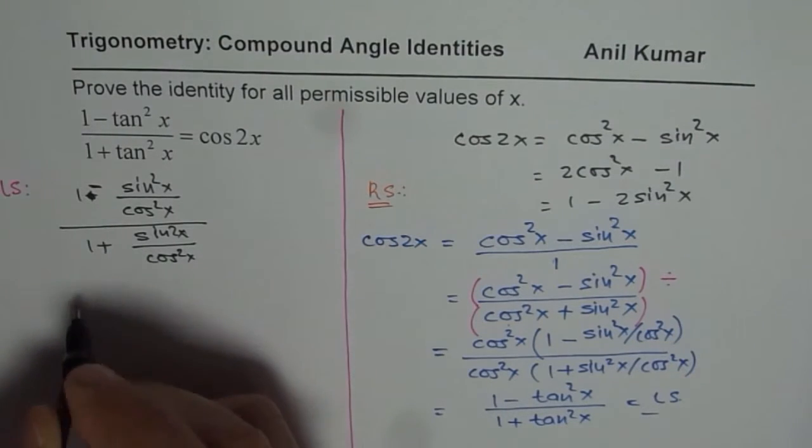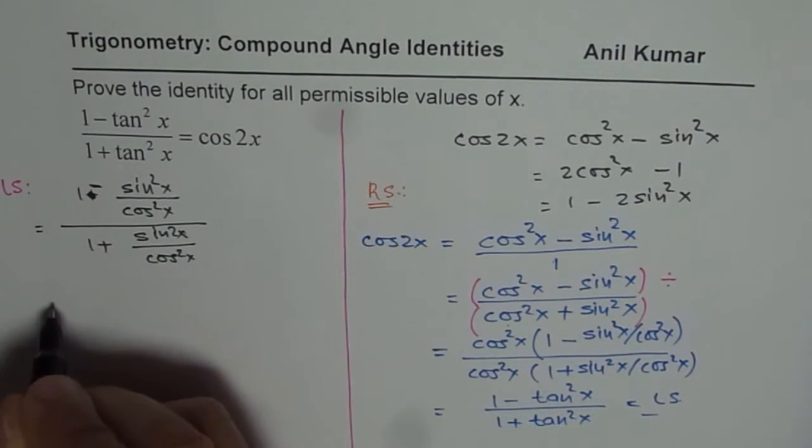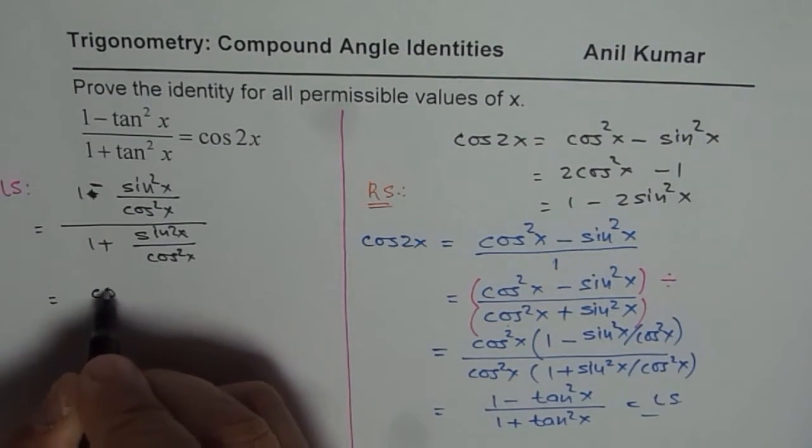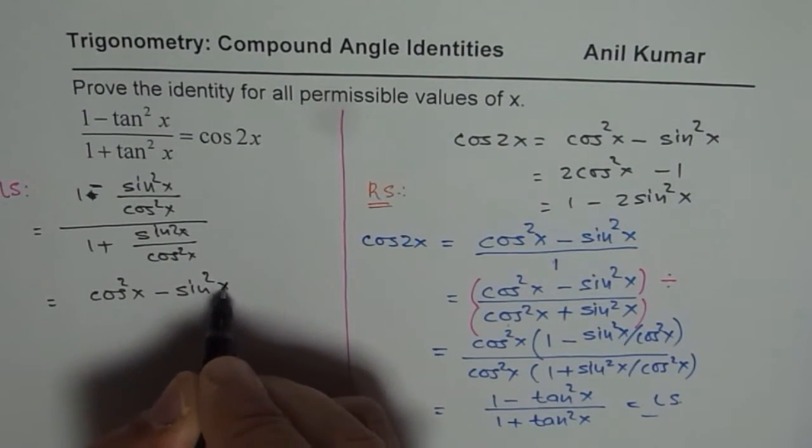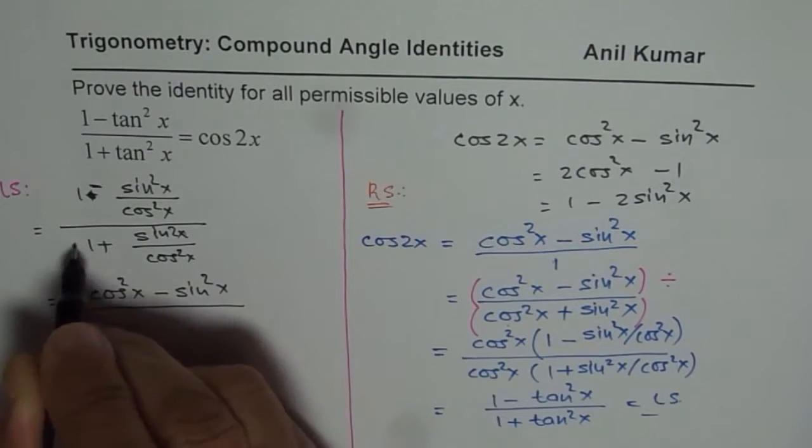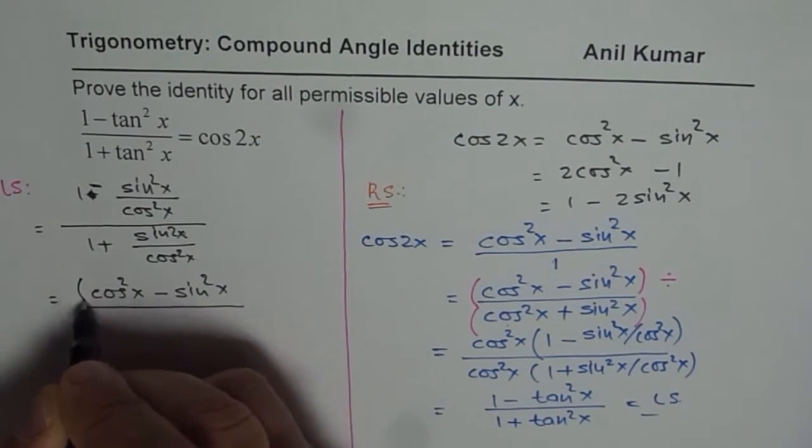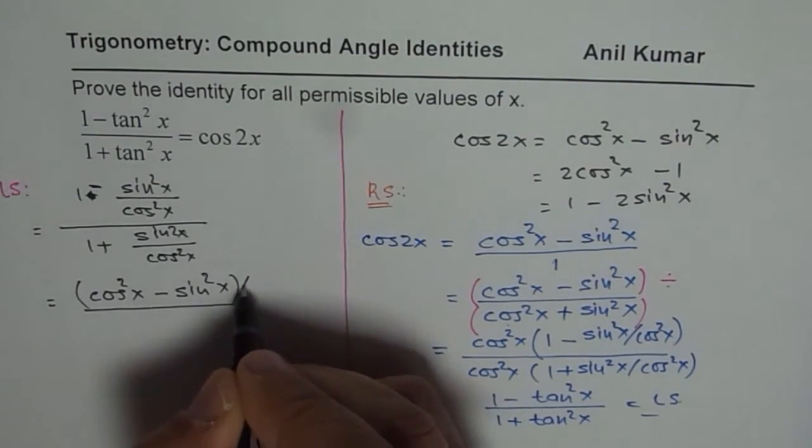Sin square x over cos square x. So we take common denominators. So left side could be equals to cos square x minus sin square x divided by, so when you take all this, divided by cos square x.